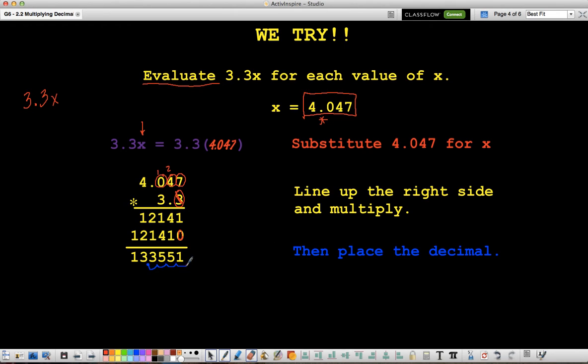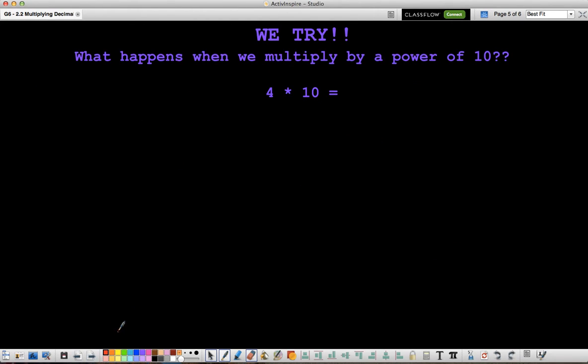So my answer is 13.3551 ten thousandths. Typically, we won't be working with numbers this big, but I wanted to show you how this works when you have lots of numbers after the decimals, and in both numbers.